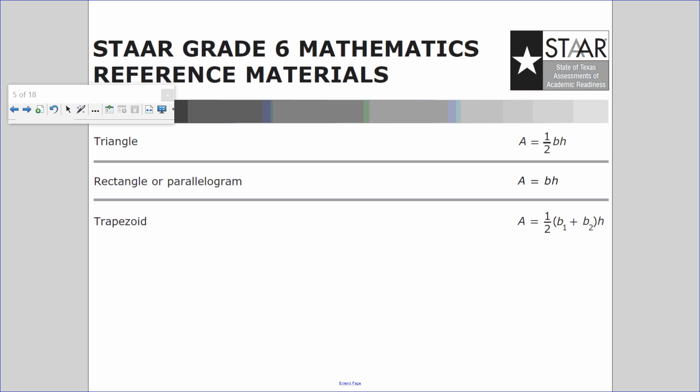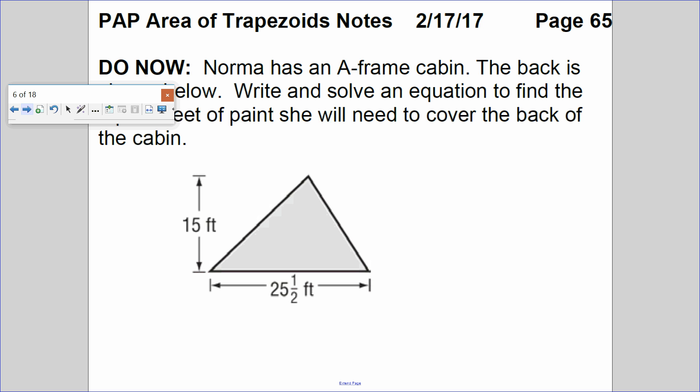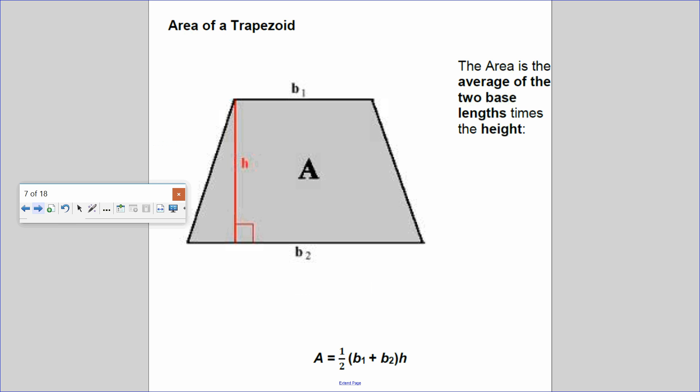We're going to be finding the area of a trapezoid. Actually, I'm going to skip this one. Let's just go straight to the area of a trapezoid. The area is the average of the two base lengths, base one, base two, then you do times the height and half of it. So we're finding the average of the two bases. That's why we're dividing by two. Then you multiply by the height of it.